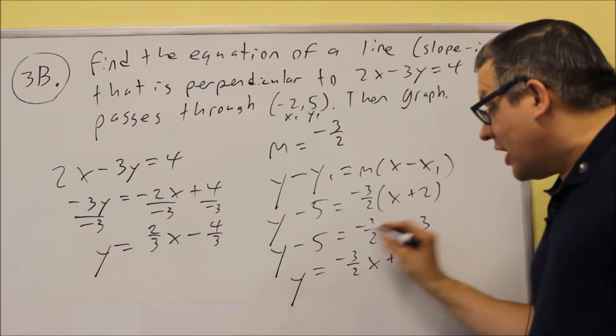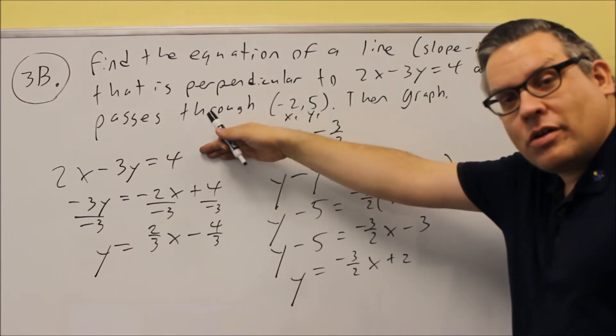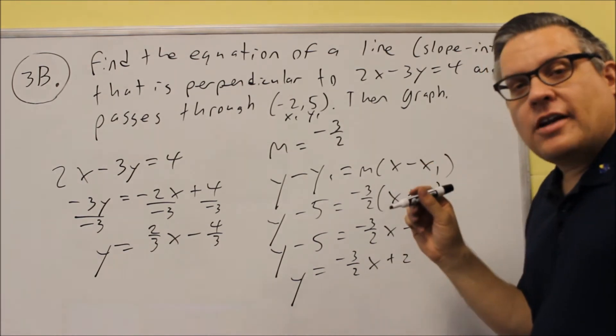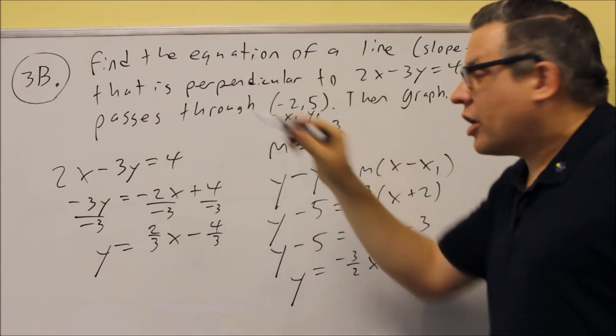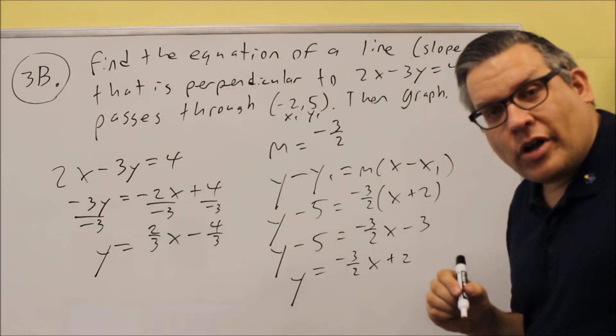So this line is going to be perpendicular to the original one and it passes through the point negative 2, 5. Now something to keep in mind is, instead of perpendicular, they might have parallel. If it said parallel, the difference would be that you would use a slope 2/3 instead of negative 3/2.